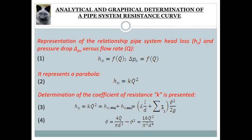The resistance curve of a simple pipe represents the graphical relationship between the head energy loss HV or the pressure drop delta PV and the flow rate Q, which is given in equation 1. The pipe system resistance curve represents a parabola, which can be described by equation 2.